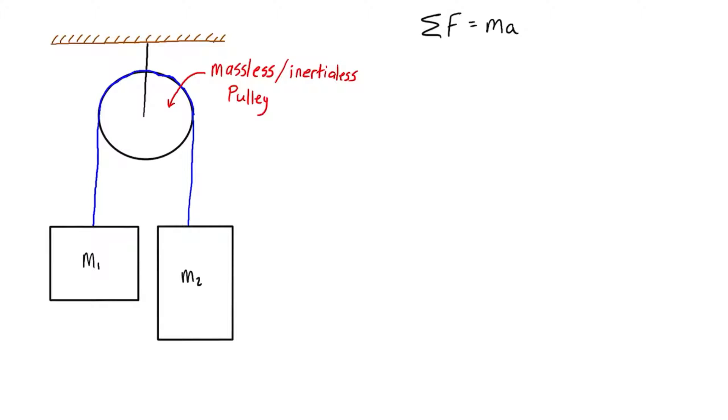The forces are tension and weight of each block. If we draw a free body diagram for m1, we have tension pulling up and weight acting down. For mass 2, we have the same tension pulling up because tension is the same in the cord with an inertialess pulley, and we have its weight pulling down.